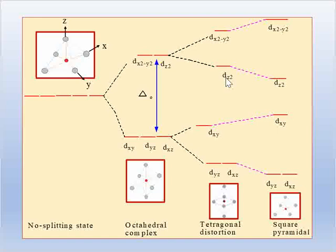If the z orbital is far away, the splitting decreases and the energy decreases for z-related orbitals. The dx²-y² has the highest energy because there are four ligands in the x and y direction. The dx²-y² orbital is present along the axis, and the bond length between metal and ligand in the planar position is smaller, so this orbital will have the highest splitting energy.